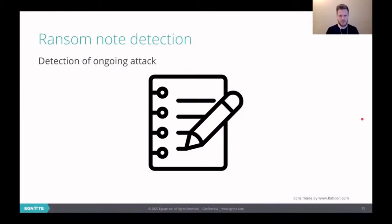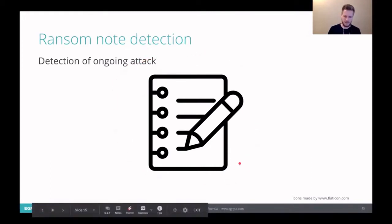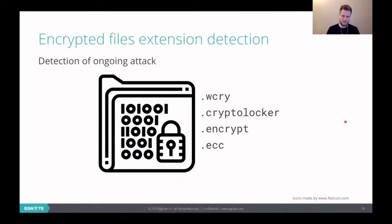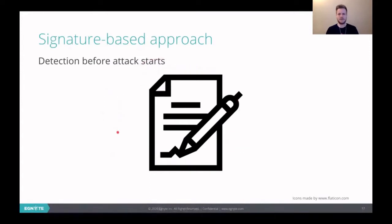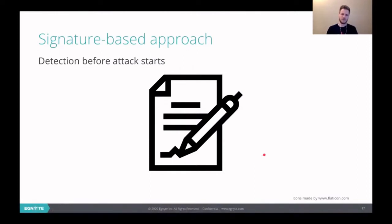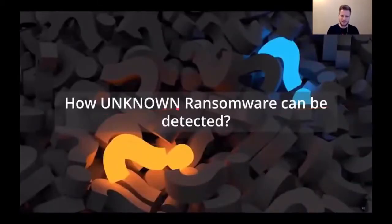So there are some common approaches. For example, we can detect the ransom note, the text file with instructions how to pay the ransom to the attacker. If we see a ransom note of known ransomware, then we can detect the ransomware. Or we can detect known encrypted file extensions. But this is working only on the known ransomware. There is one more method which is commonly used in antivirus software, a signature-based approach. It detects known ransomware program signature. But like I mentioned before, all those methods work only on known ransomware, when we know the signature that we are looking for, when we know file extensions or the ransom note. But how to detect unknown ransomware?